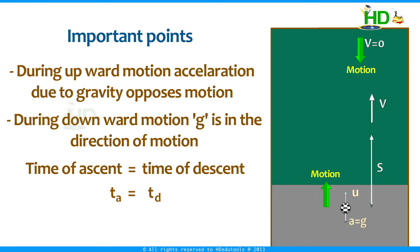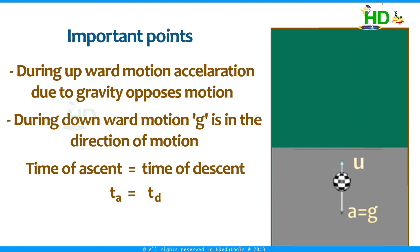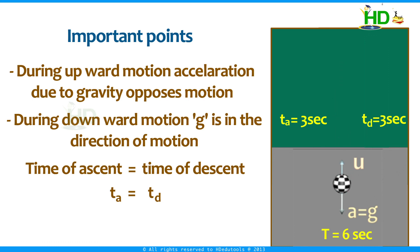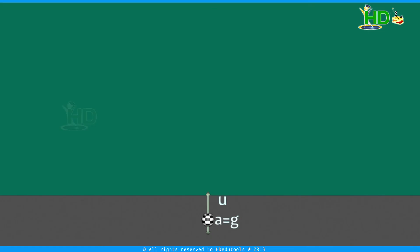For example, if a body is projected vertically up and the total time of flight is 6 seconds, then the time of ascent is 3 seconds and the time of descent is 3 seconds. As seen in the figure, positions after the 1st, 2nd, and 3rd seconds during ascent are marked.